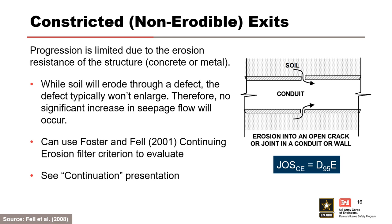To evaluate the likelihood of soil continually eroding through a defect, the defect opening size is evaluated similarly to a filter opening size. The joint opening size is compared to the D95E of the adjacent or enveloping soil. If the joint opening size is greater than the D95E, the probability of continuation is 1. If it is less, the probability can be determined using the constricted exit worksheet in the RMC filter evaluation continuation toolbox.